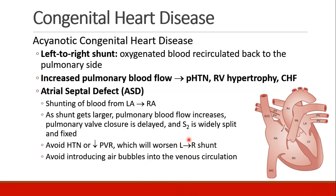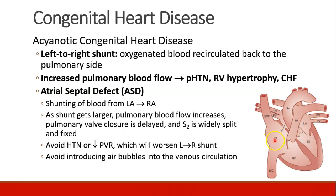An atrial septal defect, or ASD, is one of the most common congenital heart diseases. We see shunting of blood from the left atrium to the right atrium, and then the blood will go back into the ventricle, to the lungs, and then when it returns to the left atrium, some of it is shunted back to the right atrium again.